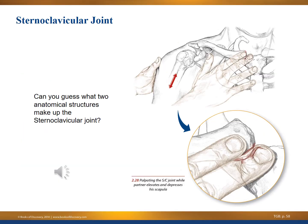The sternoclavicular joint is a great place to do a little body work, just at that SC joint and just above the clavicle. Can you guess what two anatomical structures make up the sternoclavicular joint? If you guessed the sternum and the clavicle, you'd be correct.